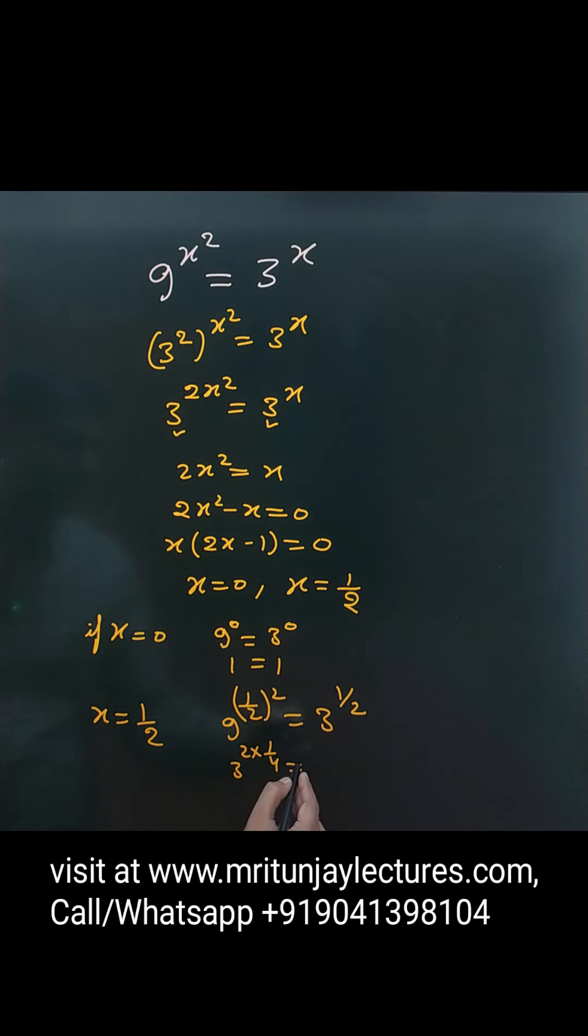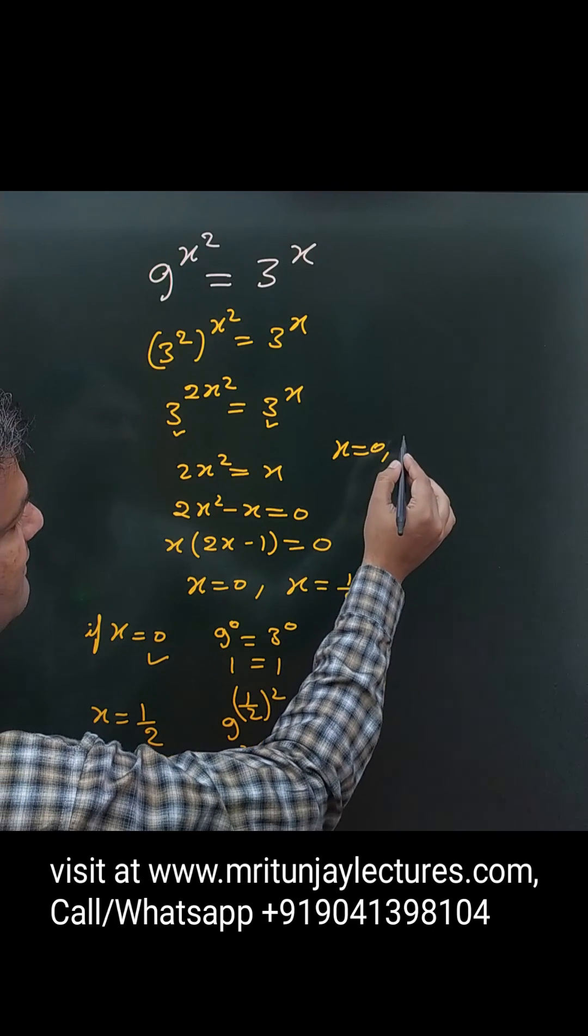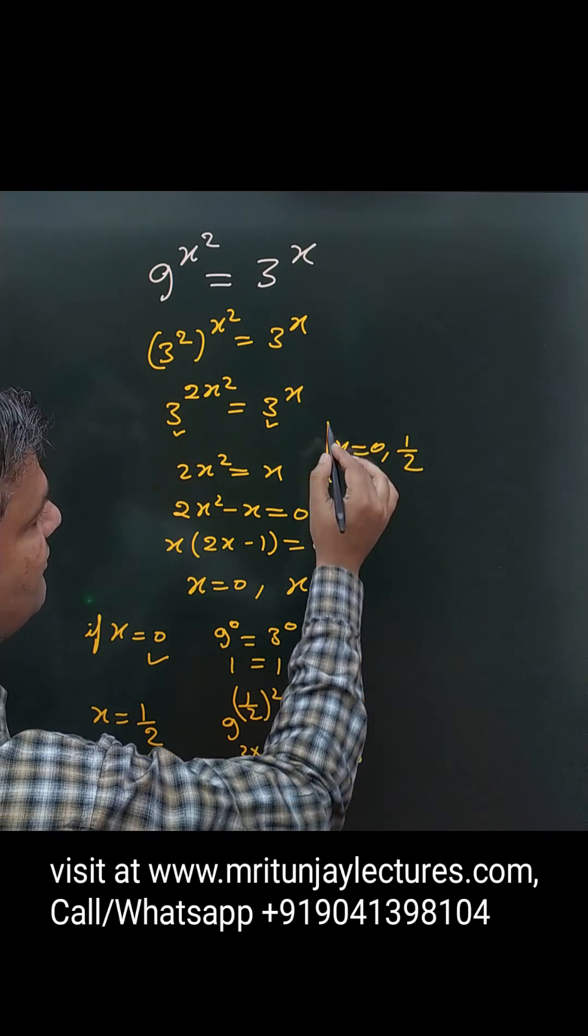So basically 3 to the power 1/2. This means x equals 1 by 2 is the right answer, and x equals 0. There are two values possible: x equals 0 and x equals 1 by 2. Okay.